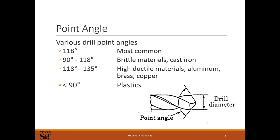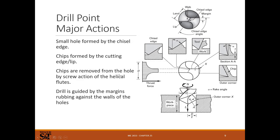Drill angles: a standard set will probably be 118°, which is the most common generic point angle. There are other angles for specialty materials — for brittle materials like cast iron you might want a bit less, for ductile materials like aluminum, brass, or copper you might want a bit more, and for plastics a pretty small point angle. 118° is a good compromise that works well for most materials.